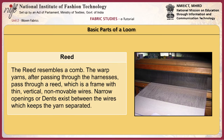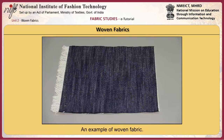The reed resembles a comb. The warp yarns, after passing through the harnesses, pass through a reed which is a frame with thin vertical non-movable wires. Narrow openings exist between the wires which keep the yarn separated. This is an example of a woven fabric.